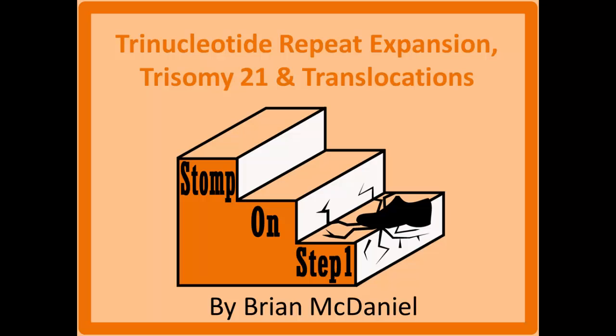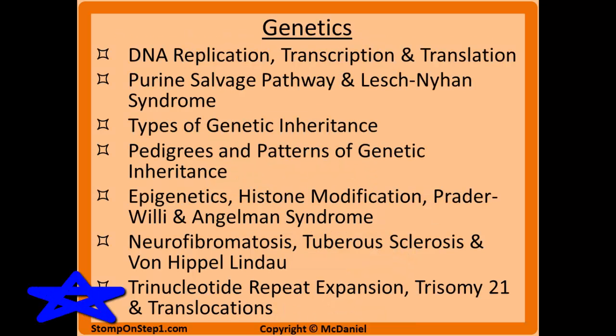Distinguished future physicians, welcome to Stomp On Step 1, the only free video series that helps you study more efficiently by focusing on the highest yield material. In this video we're going to be covering trinucleotide repeat expansion diseases, trisomy 21 or Down syndrome, and chromosomal translocations. These topics didn't fit into the other videos, so they're grouped here to wrap up this genetics section. This is the last video of my seven video series covering genetics for Step 1.